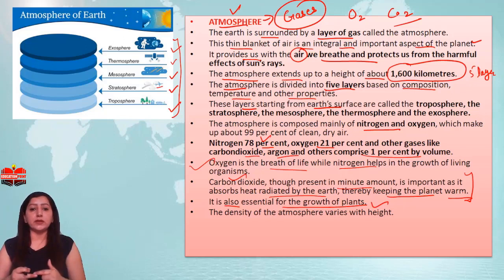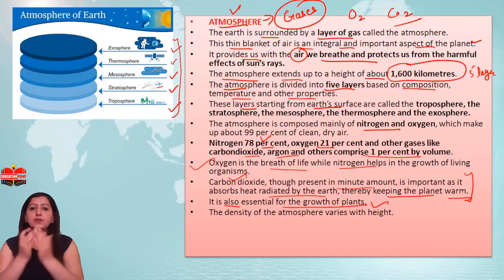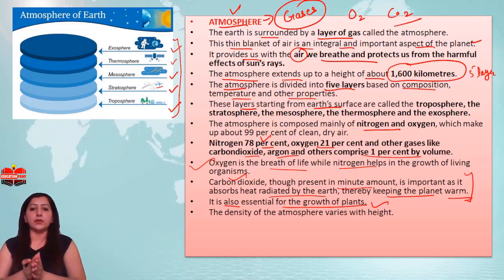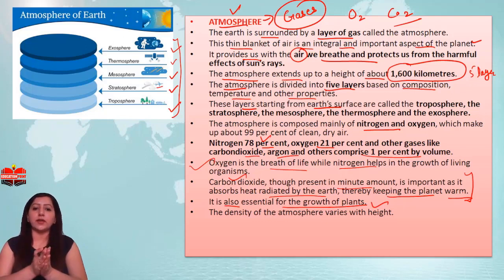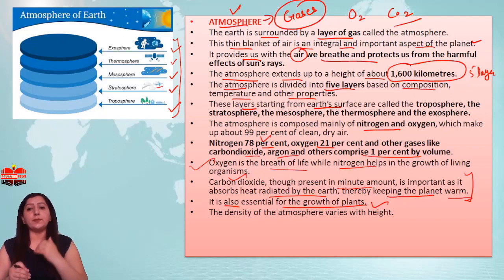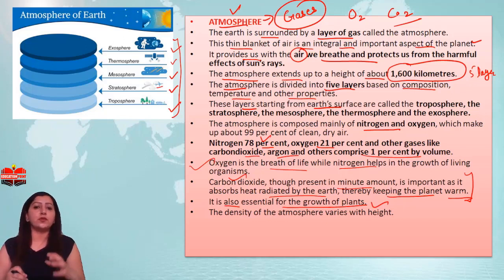We need to remember why carbon dioxide is necessary: whatever heat comes from the Sun and whatever heat radiates from the Earth, carbon dioxide absorbs it. That is why our planet is warm. If we did not have carbon dioxide, our planet would not be warm, and life as we know it would not be possible.